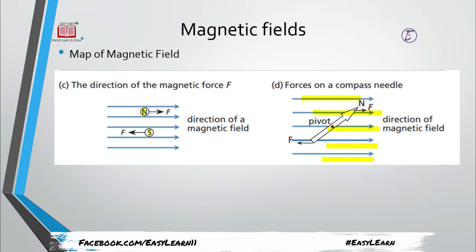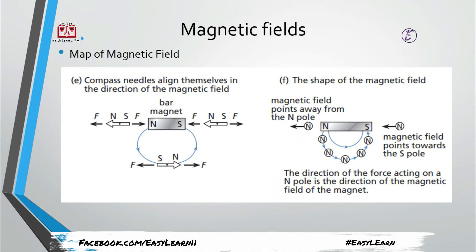The compass needle aligns itself in the direction of the magnetic field. The arrowhead pointing right means the north pole is in that direction. The needle tries to align according to the north and south poles — always entering toward the south and starting from the north going into the south. This direction is one field line, and there are several such lines.